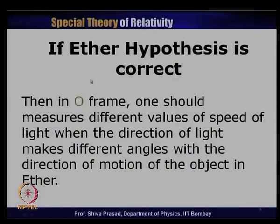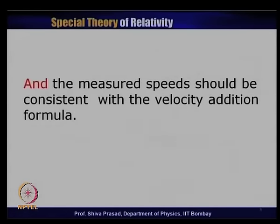One conclusion I want to draw: if the ether hypothesis is correct, then if I am in any other inertial frame, I will find that the magnitude of the speed of light in that frame would be direction dependent. In the O-frame, one should measure different values of the speed of light when the direction of light makes different angles with the direction of motion of the object in ether. The measured speeds should be consistent with the velocity addition formula.